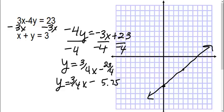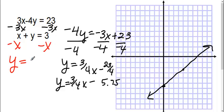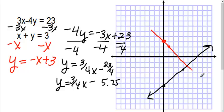Now I need to graph my second equation. Here I have x plus y equals 3, so I need to get it into slope-intercept form. I'm going to subtract x on both sides, so I get y equals negative x plus 3. I'll graph that with a y-intercept of positive 3. My slope is negative 1, so down 1 to the right 1. We connect our dots.